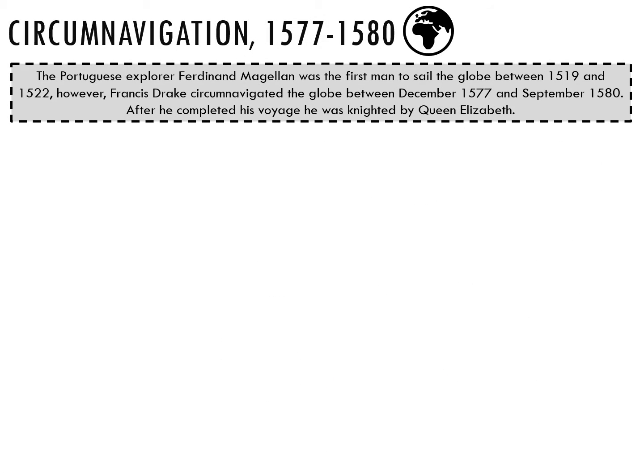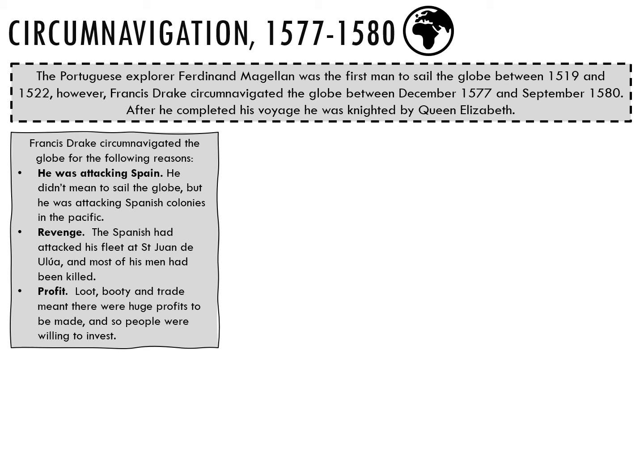The Portuguese explorer Ferdinand Magellan was the first man to sail the globe, between 1519 and 1522. However, Francis Drake circumnavigated the globe between December 1577 and September 1580, and after completing his voyage he was knighted by Queen Elizabeth. Drake circumnavigated the globe for several reasons: he was attacking Spanish colonies in the Pacific as relations with Spain were declining; he sought revenge after the Spanish attacked his fleet at San Juan de Ulúa, where most of his men were killed; and he did it for profit, as loot, booty and trade meant huge profits were to be made, leading people — including Elizabeth I — to invest in the expedition.